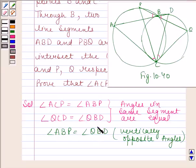Angle ABP is equal to angle QBD. Therefore, we can conclude that angle ACP is equal to angle QCD.